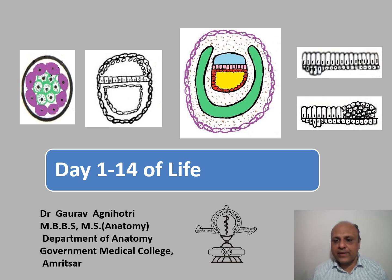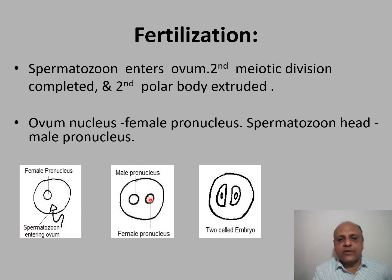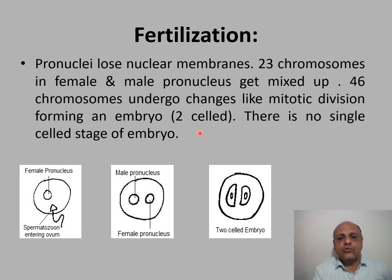Welcome back students. Today we cover the pre-organogenesis period, or the first 14 days of life. Fertilization takes place in the ampulla of the fallopian tube. The spermatozoon enters the ovum, the second meiotic division is completed, and the second polar body is extruded. The head of the spermatozoon forms the male pronucleus while the ovum nucleus forms the female pronucleus, each having 23 chromosomes. The pronuclei lose their nuclear membranes and the 46 chromosomes undergo mitotic division, forming a two-celled embryo.